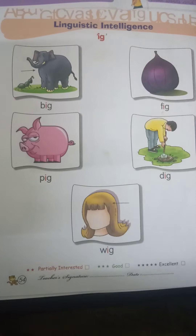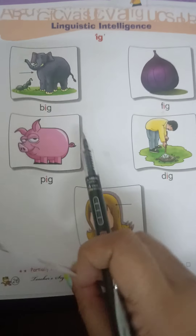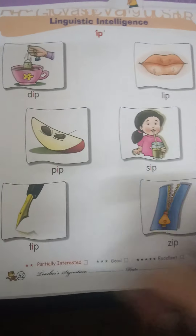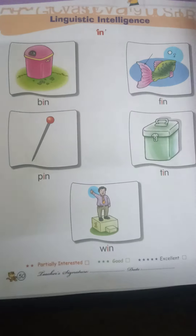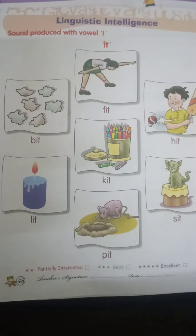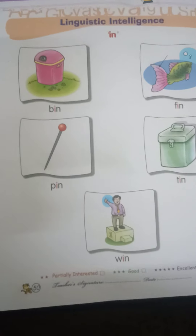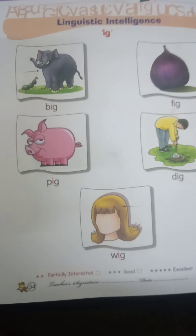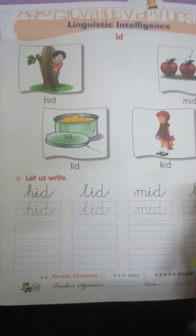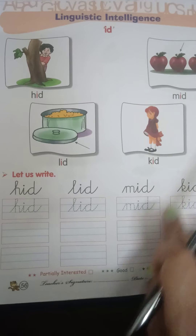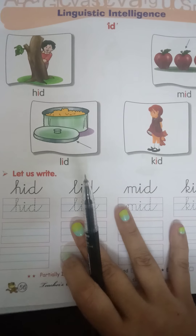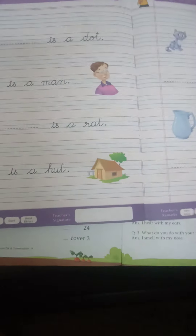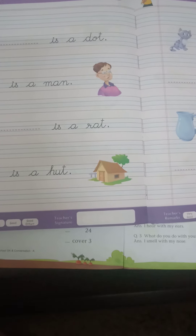These all are I words — IT, IN, IP, IG, and ID. Aapne daily e-book read karni hai. Okay.